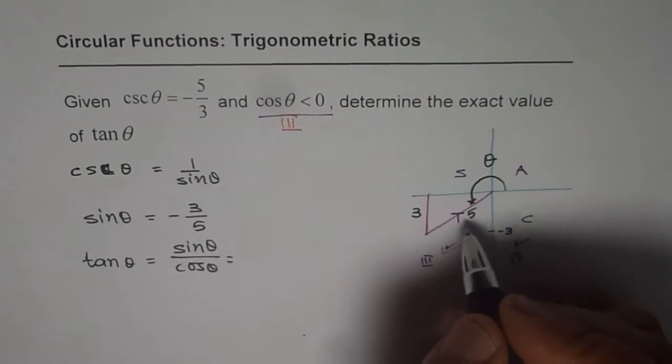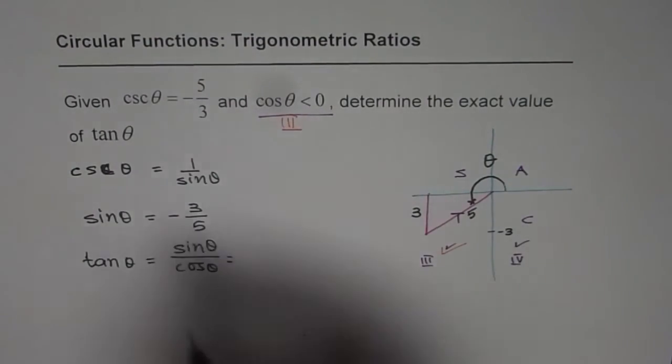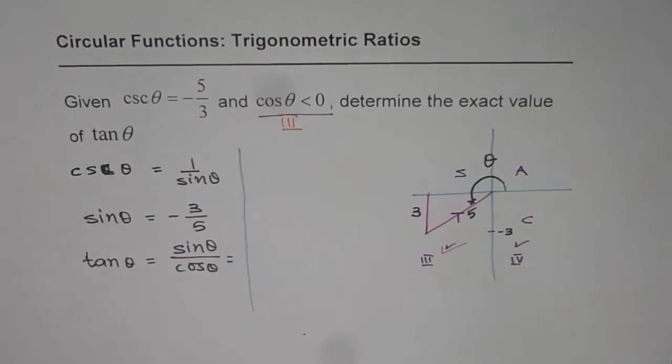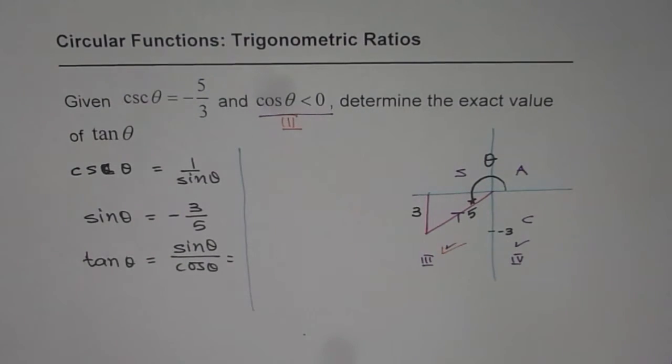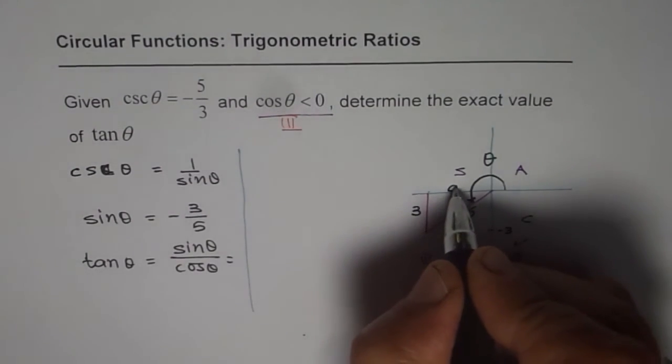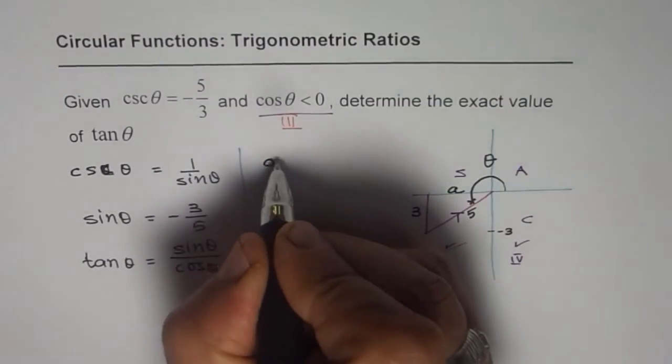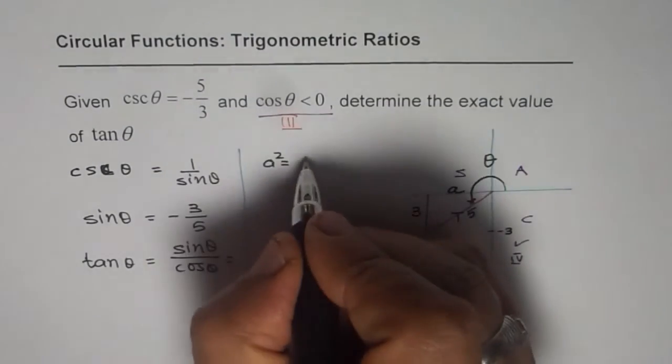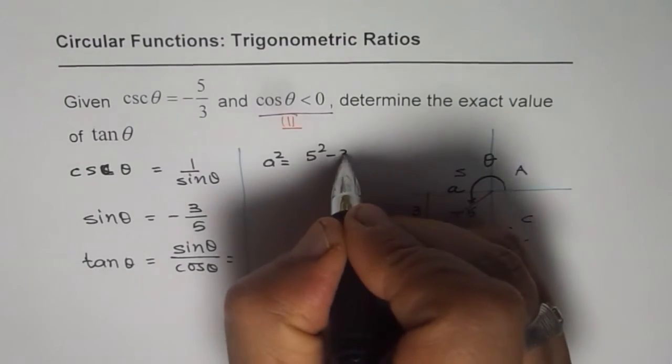So adjacent side should be equal to, we can use Pythagorean theorem. So we find using Pythagorean theorem that this side, let me call this side as A, will be A squared equals 5 squared minus 3 squared.